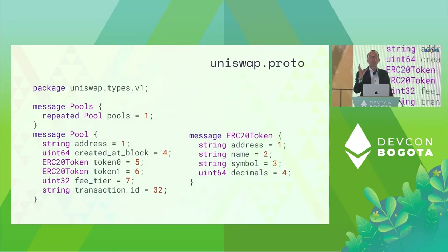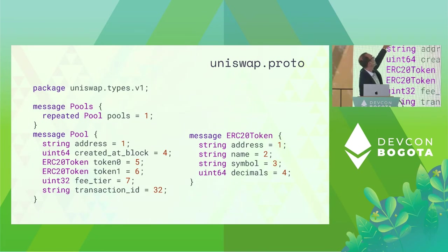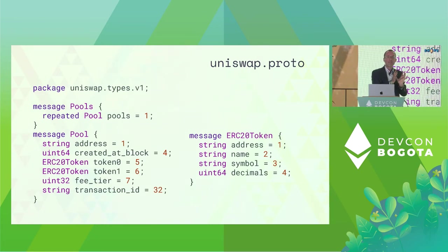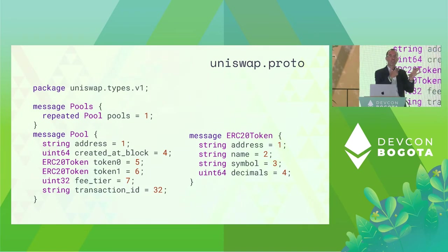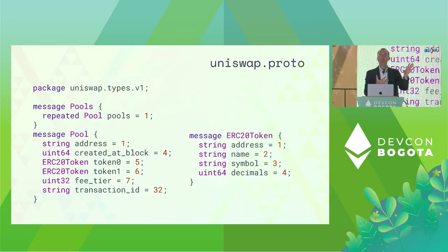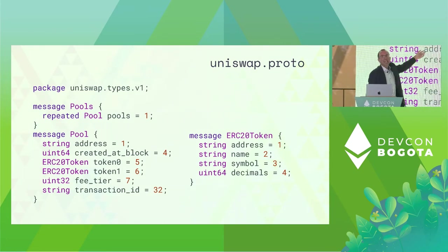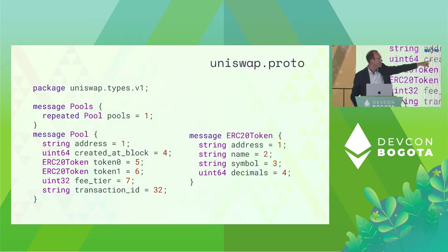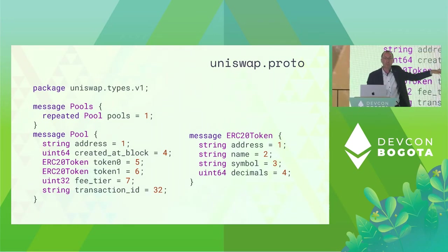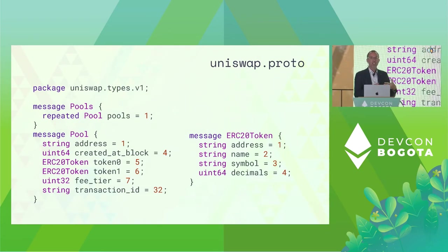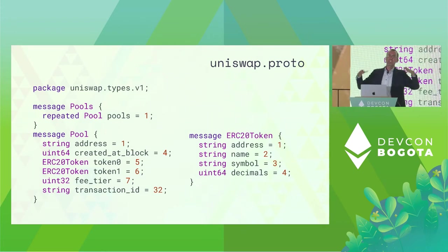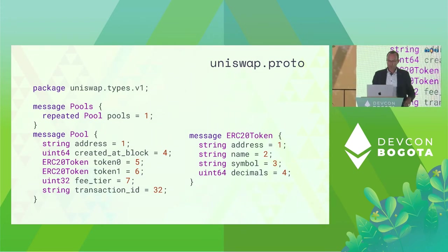Let's look at the simplified data model for Uniswap v3. The Pools object is a list of pool — this is what gets handed off from the mapper, which finds the pools that were created, down to the store_pools module. It has a list of pools with an address and the two tokens concerned. We have a reference to the token as well, which is going to be very useful to enrich the data downstream. We'll have the decimals right at hand so we can enrich those uint256 values and put the decimal point where it belongs.